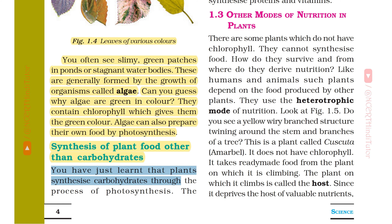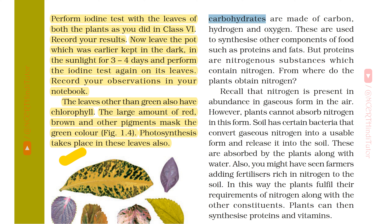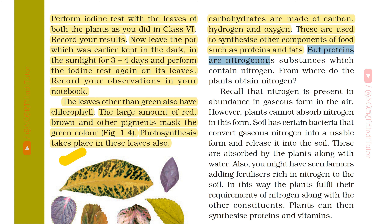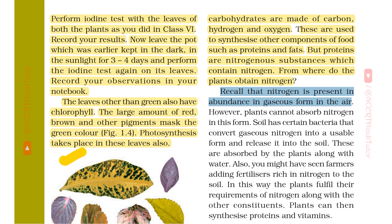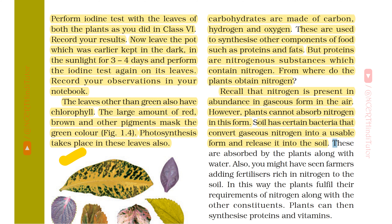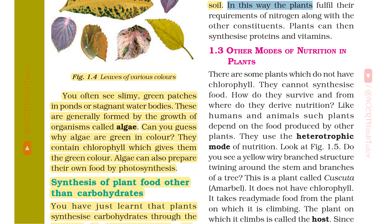Plants synthesize carbohydrates through the process of photosynthesis. Carbohydrates are made of carbon, hydrogen and oxygen. These are used to synthesize other components of foods such as proteins and fats. But proteins are nitrogenous substances which contain nitrogen. Plants cannot absorb nitrogen in gaseous form from the air. Soil has certain bacteria that convert gaseous nitrogen into a usable form and release it into the soil. These are absorbed by the plants along with water. Farmers also add fertilizers rich in nitrogen to the soil. In this way, plants fulfill their requirements of nitrogen and can then synthesize proteins and vitamins.